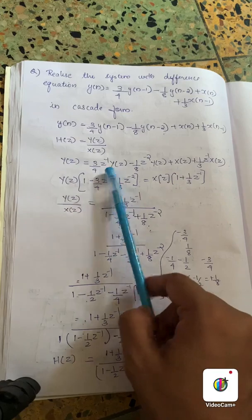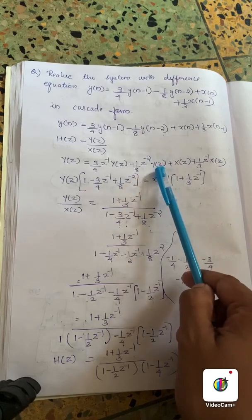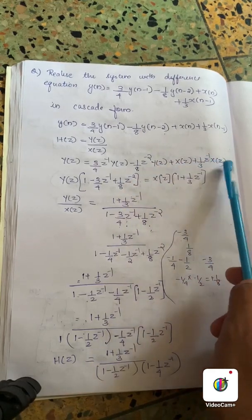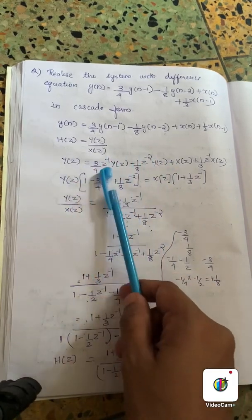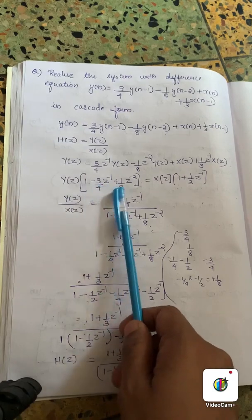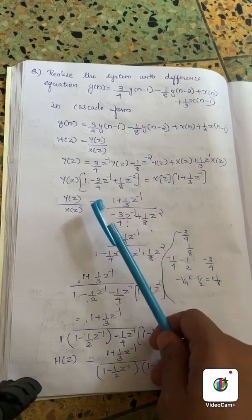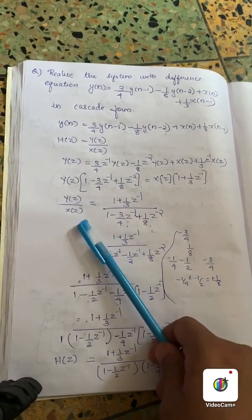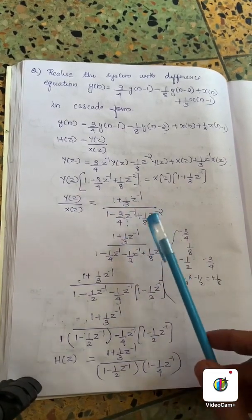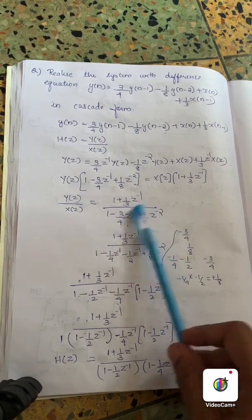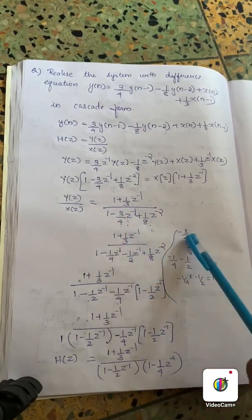Y of z is equal to 3 by 4 z inverse y of z minus 1 by 8 z raise to minus 2 y of z plus x of z plus 1 by 3 z inverse x of z. Y of z, y of z divided by x of z.